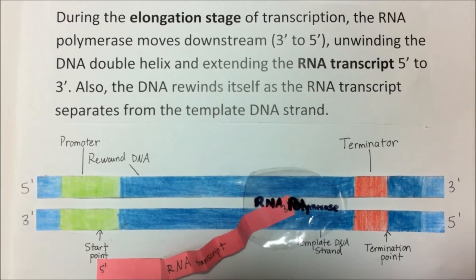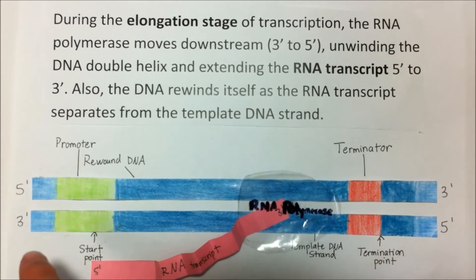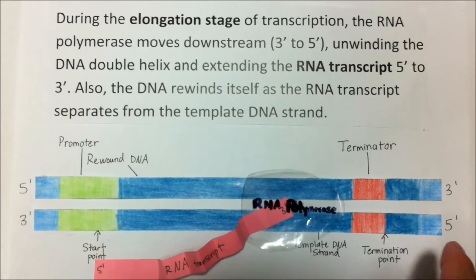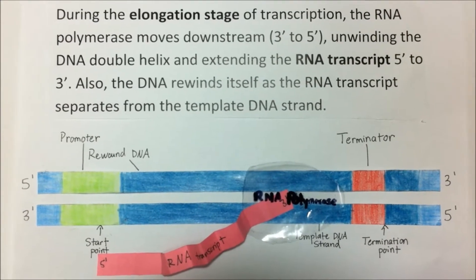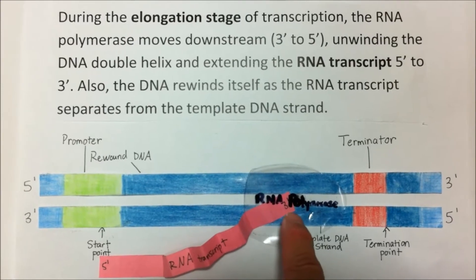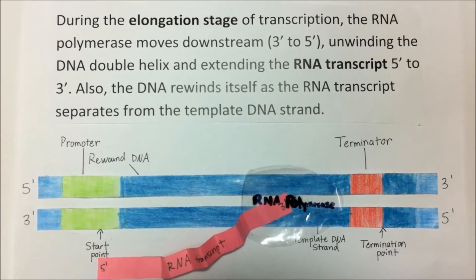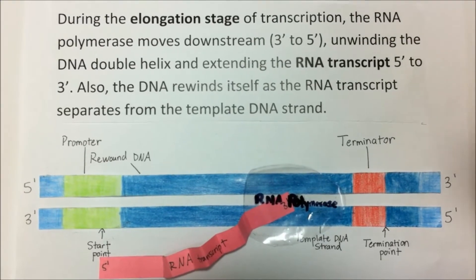During the elongation stage of transcription, the RNA polymerase moves downstream 3' to 5', unwinding the DNA double helix and extending the RNA transcript 5' to 3'. Also, the DNA rewinds itself as the RNA transcript separates from the template DNA strand.